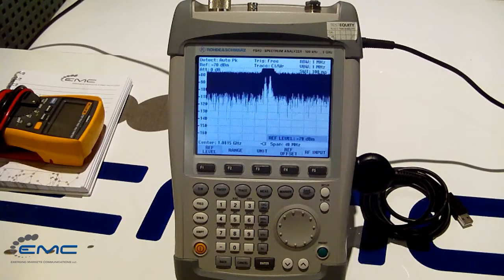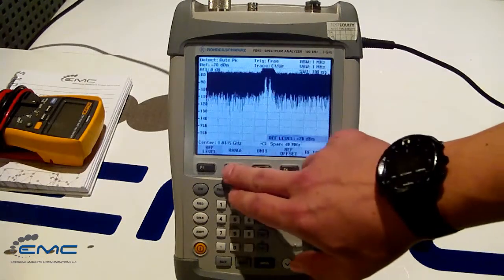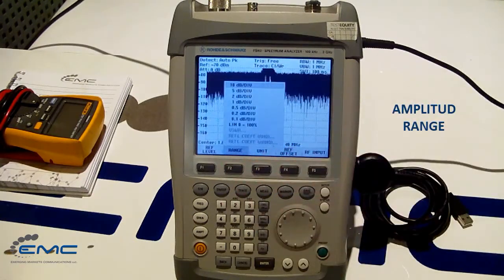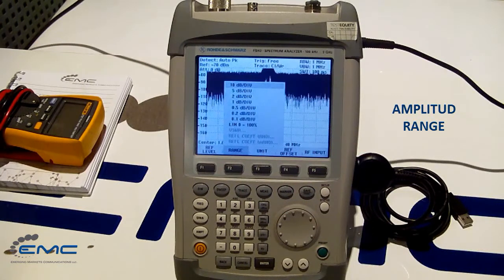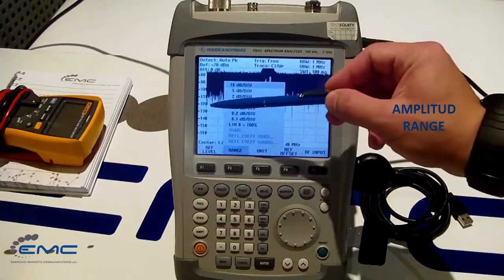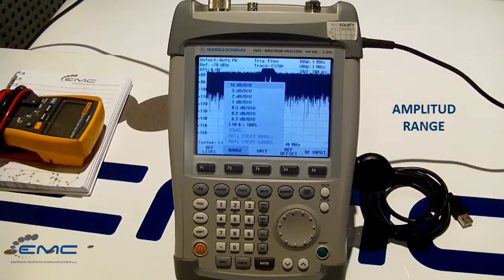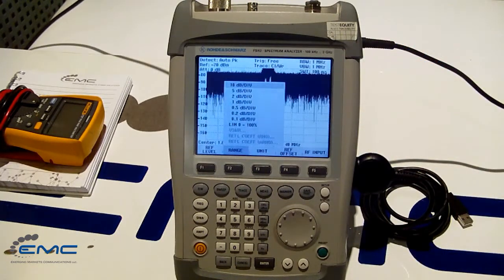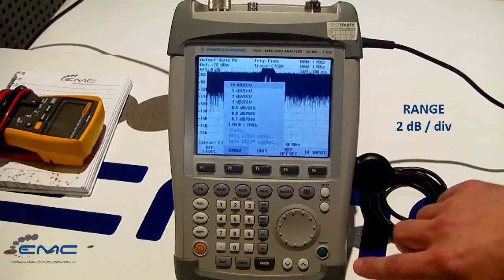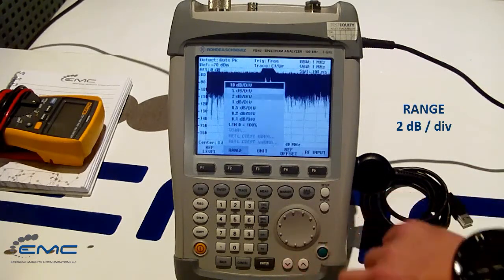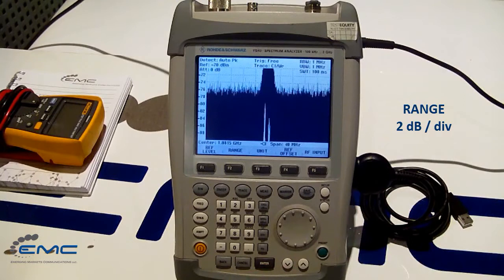Now let's change range settings as well. Now the range we have, and we can see from the level axis scale, we have 10 dB per division. Let's use 2 dB per division and keep in mind that we can always play with it if we need it.